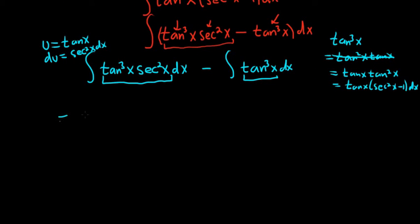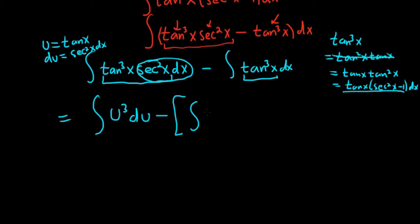So this is equal to, so this piece here is going to be u cubed du. No problems there, right? This piece here is our du minus, and then I'm going to use a bracket here. So this is going to be the integral of this, right? So we have tangent x, parentheses, secant squared x minus 1, and then dx, and then bracket.